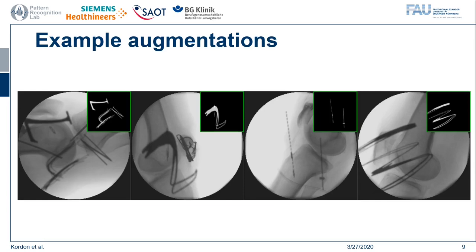Here you can see some examples of the results of this process. We can see that we achieve a broad spectrum of different shapes as well as different degrees of overlap based on the different fonts we use. For example, in the first image it is actually pretty hard to tell that these are artificial objects and not real tools between the x-ray source and the patient.